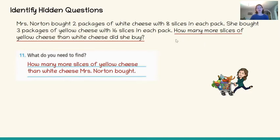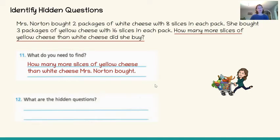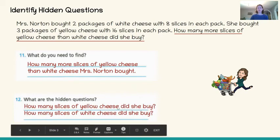I often underline the question — that's the final answer that I need to figure out — just to help me keep that in mind. But what are the hidden questions here? Have we been given all of the information that we need? How many more slices of yellow cheese than white cheese did she buy? Are we told how many slices of white cheese and how many slices of yellow cheese that she bought? Not exactly. So those are my hidden questions: we need to figure out how many slices of yellow cheese Mrs. Norton bought and how many slices of white cheese she bought. We've got enough information here to figure it out, but we haven't explicitly been told, so those are my hidden questions.